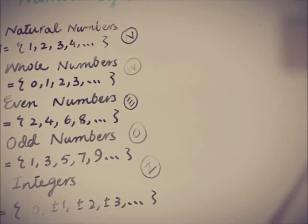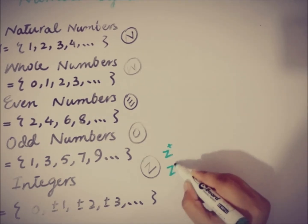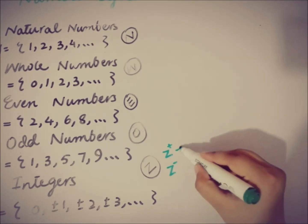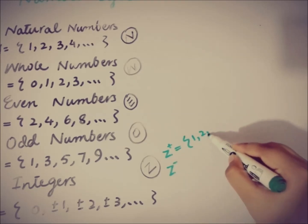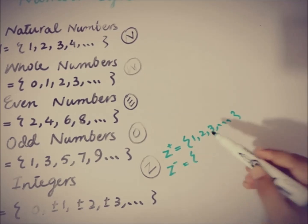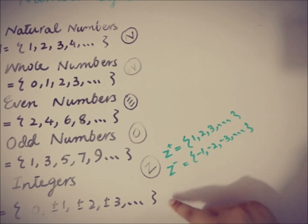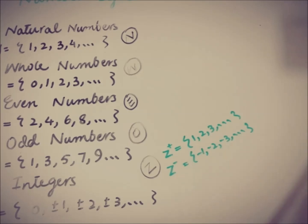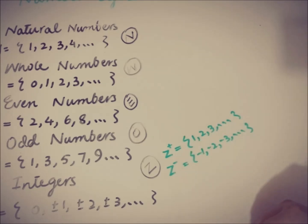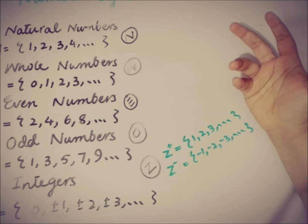We also have positive integers, represented by Z+, and negative integers represented by Z−. Positive integers are 1, 2, 3, and so on. Negative integers are −1, −2, −3, and so on. You have to note that zero is not in the positive integer set and also not in the negative integer set — so zero is neither positive nor negative. These are the five basic number types we consider at elementary level.